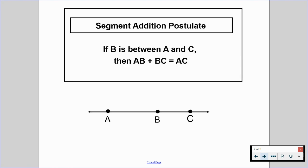So we have what's called the segment addition postulate. If point B is between points A and C, then AB plus BC is equal to AC. The length of segment AB plus the length of segment BC will give us the total length of segment AC.